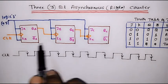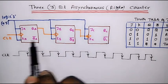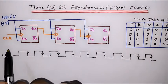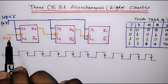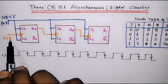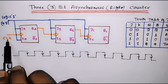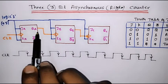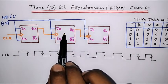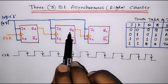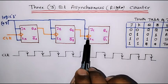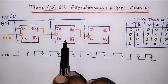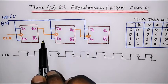Here, three JK flip-flops are used. The J and K inputs of each flip-flop are connected to logic high, or plus 5 volts. We can observe that the clock input is given to the first flip-flop, which we call flip-flop A. The output of flip-flop A acts as the clock input of the next flip-flop, flip-flop B. And the output QB acts as the clock input for the next flip-flop — the clock input is derived from the output of the previous flip-flop.